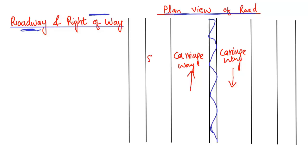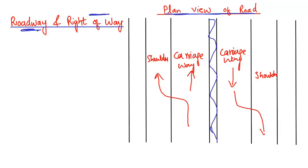Next to the carriageway we have the shoulder. The shoulder is mostly used where traffic can move off the carriageway and stop in case of an emergency. Similarly, we have a shoulder on the other side as well, where traffic can come and stop in case of emergency.